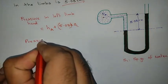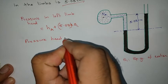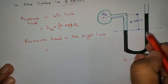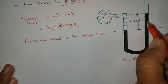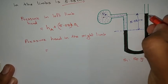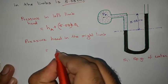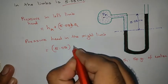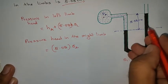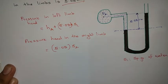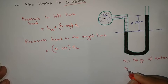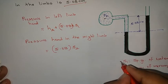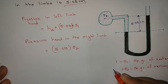Now calculate the pressure head in the right limb. Above the datum line it is completely mercury, so the pressure head equals 5.08 into S2, where S2 is the specific gravity of mercury. The specific gravity of water S1 is 1 and the specific gravity of mercury S2 is 13.6.